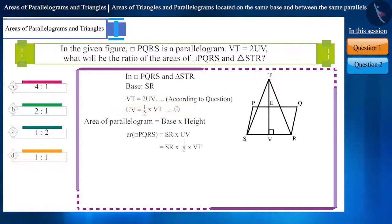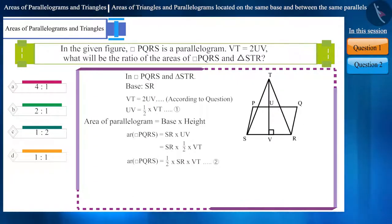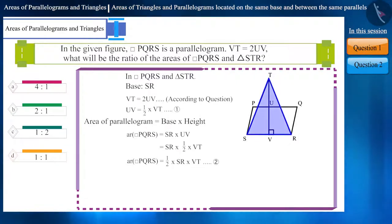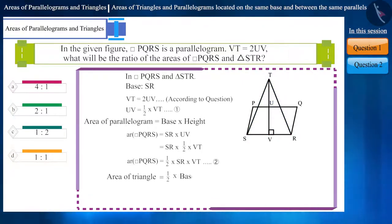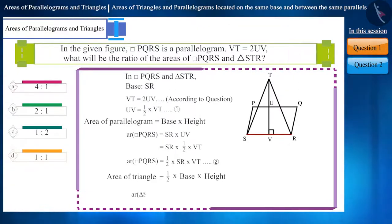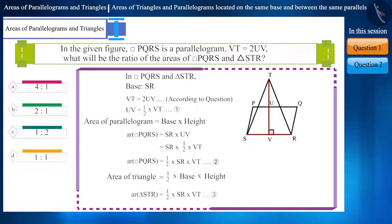By simplifying, we will get equation 2. Now let's talk about the area of triangle STR, whose base is SR and height is Vt. We know that the area of a triangle is half multiplied by base multiplied by height. We will substitute the values of base and height in this formula, and call it equation 3.